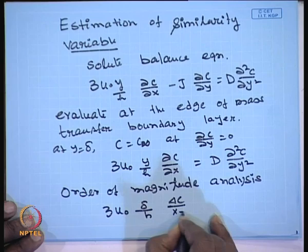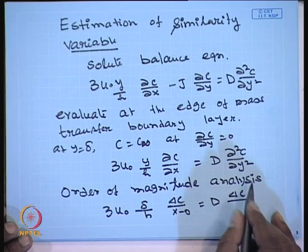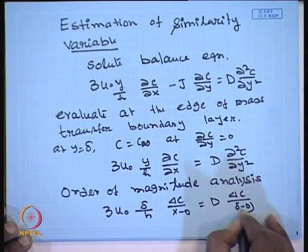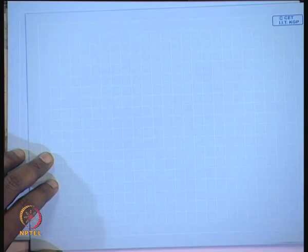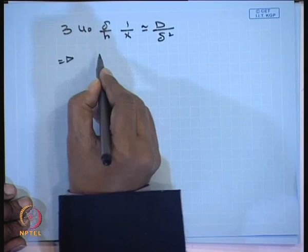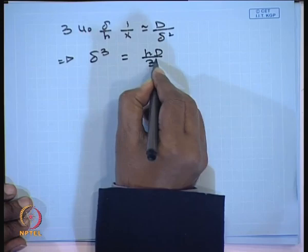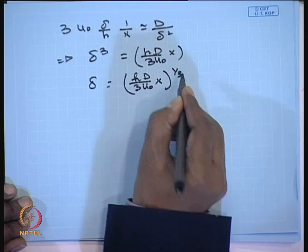So it will be x = 0, D · ∂²c/∂y² — if you are familiar with numerical differentiation, it is Δc (change in concentration) and ∂y² is (δ − 0)². If you simplify this equation, you get 3u₀δ/h. After canceling Δc from both sides, you get 1/x ≈ D/δ², giving the estimate δ³ = hD/(3u₀x), and therefore δ = [hD/(3u₀x)]^(1/3).